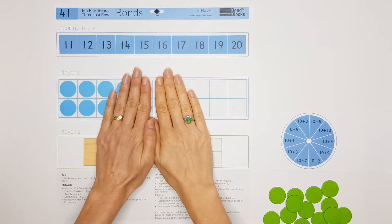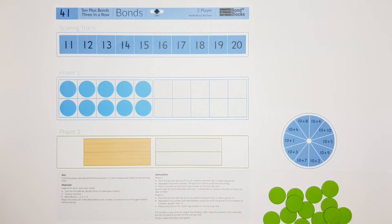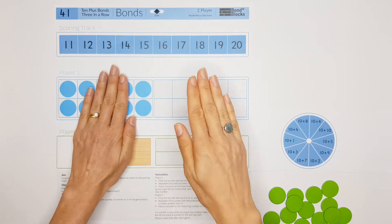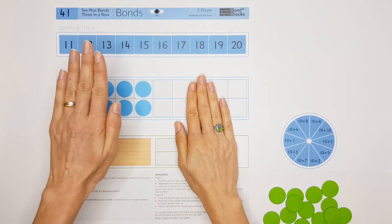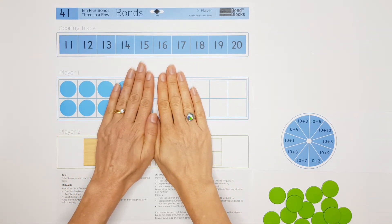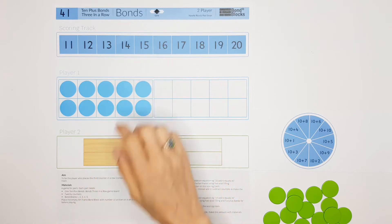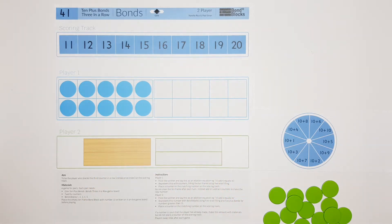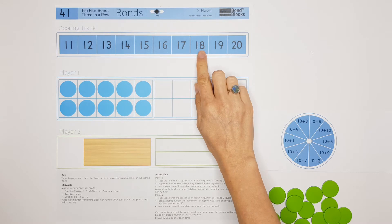We call this a 10-plus bond because the 10 plus the other part bond or join together to be equal to the whole. I'm going to give you an example for the whole of 18. 18 is equal to 10 plus 8.